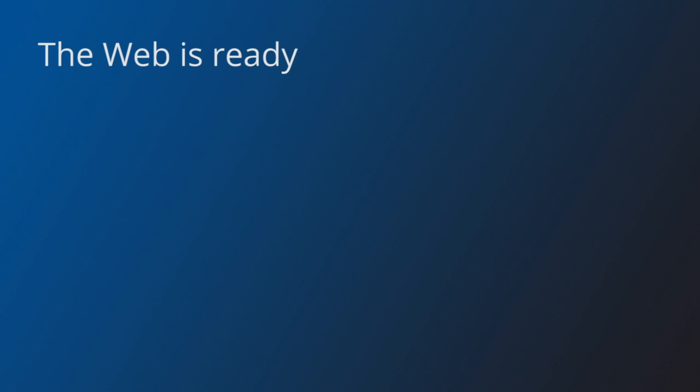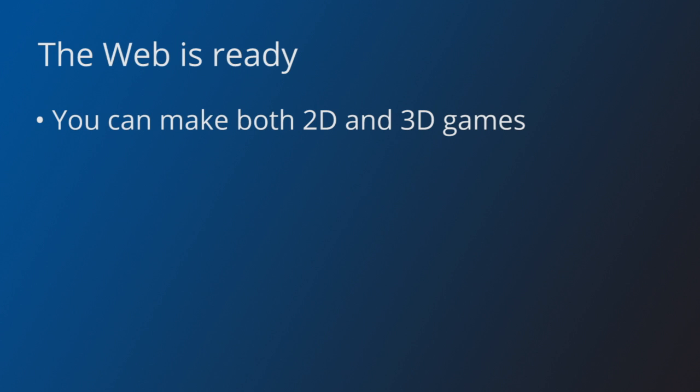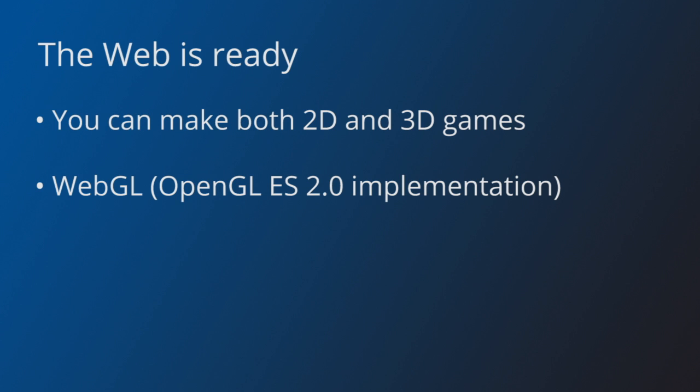Another reason is that the web as a platform is ready for games. You can make 2D games, both pixel and vector based, with the Canvas API. You can also make 3D games with WebGL, which is an implementation of OpenGL.